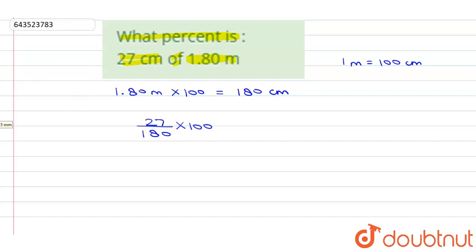...convert any value to percentage, we multiply by 100. Clearly we can cancel the zeros. And 27 and 18 are divisible by 9, so we'll divide by 9. 9 times 2 is 18, and...